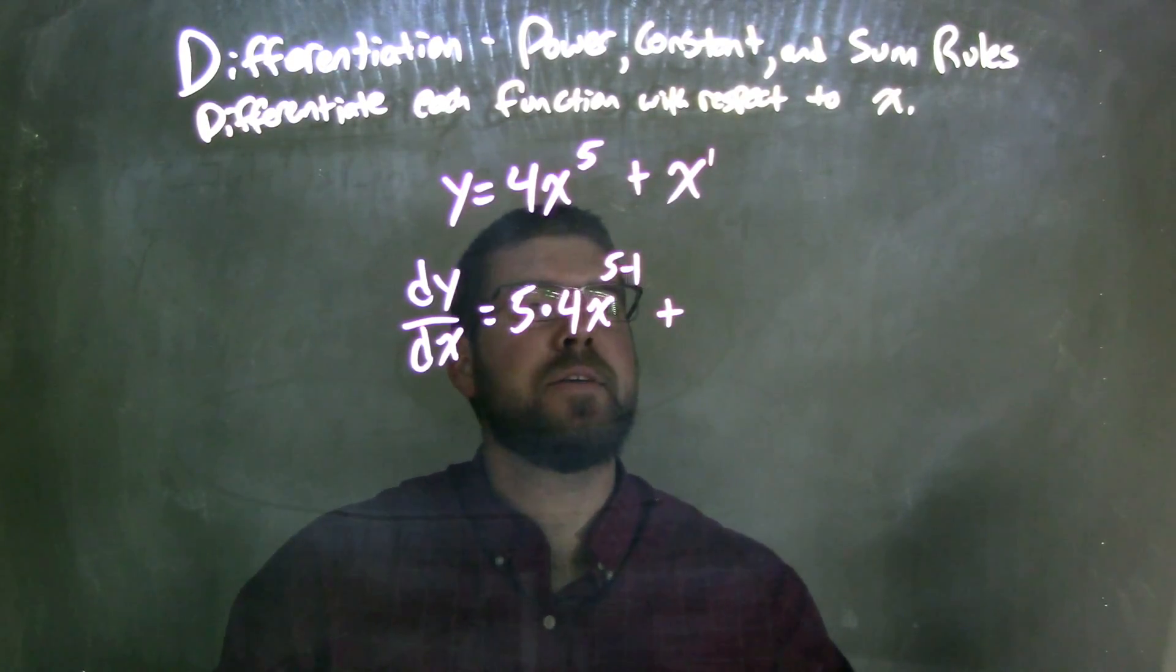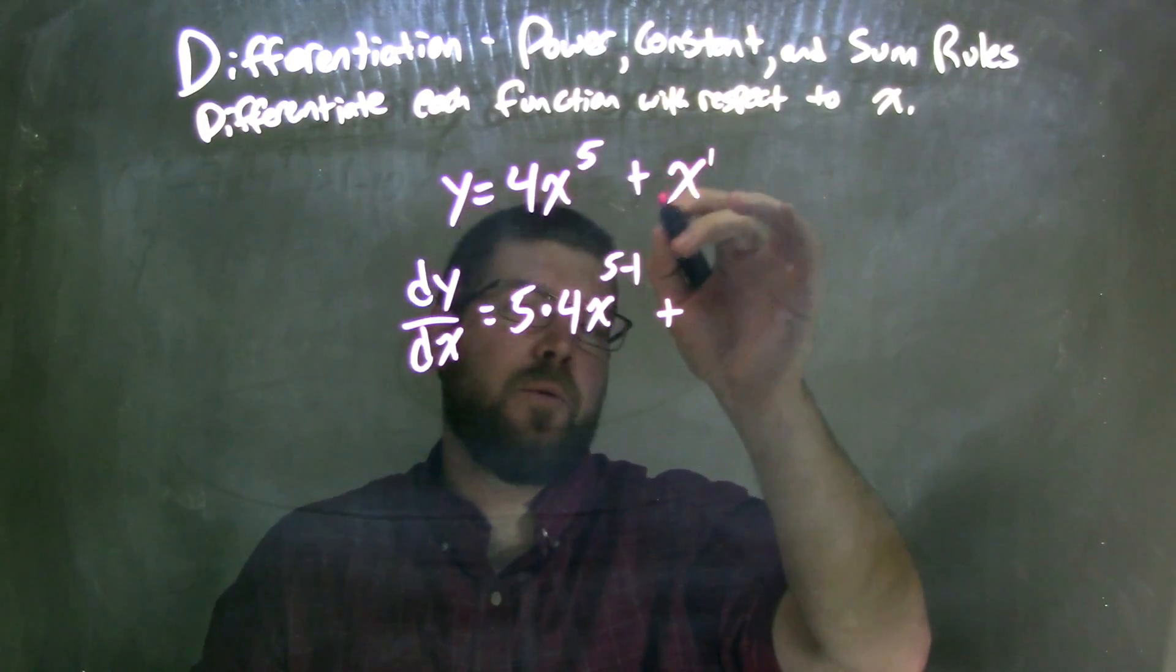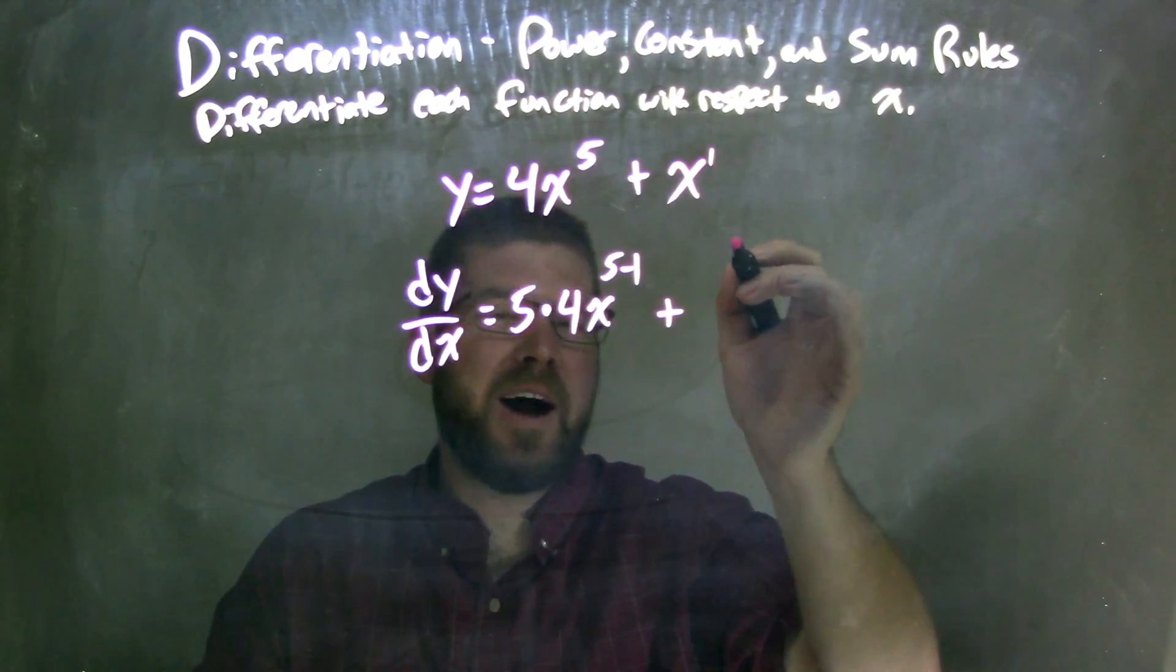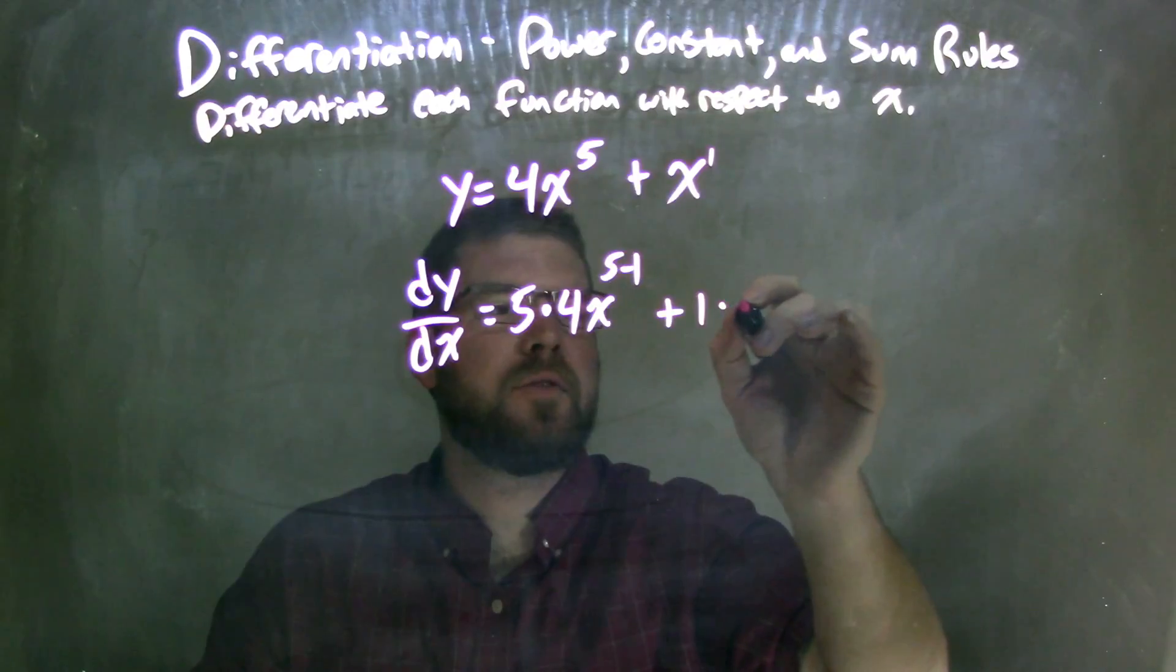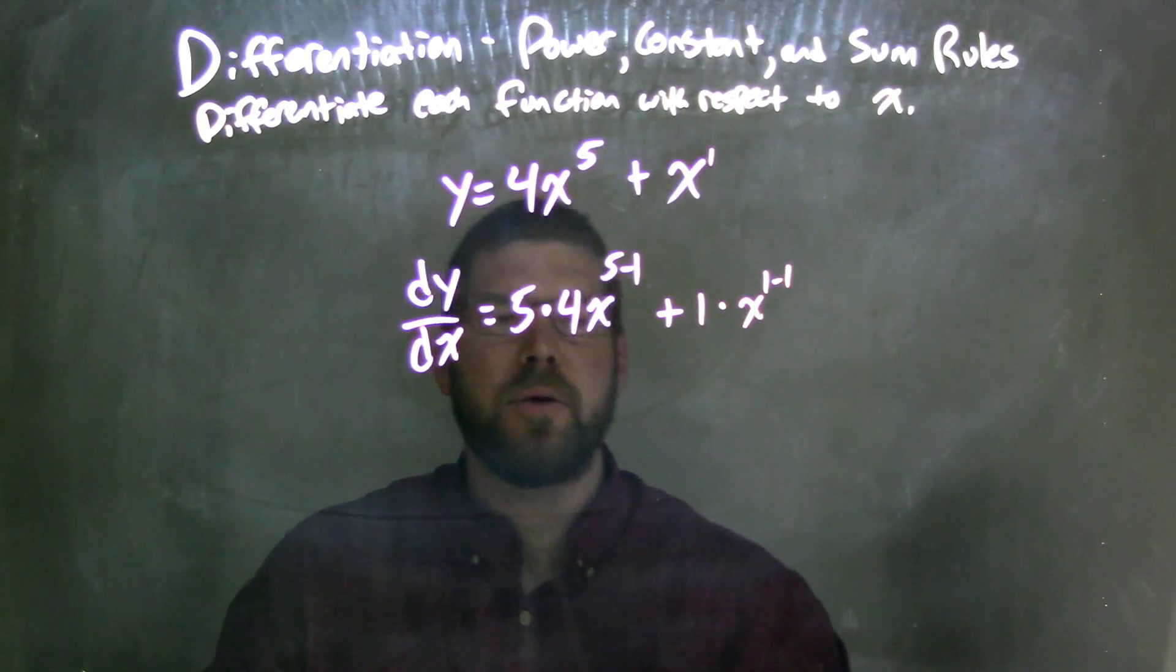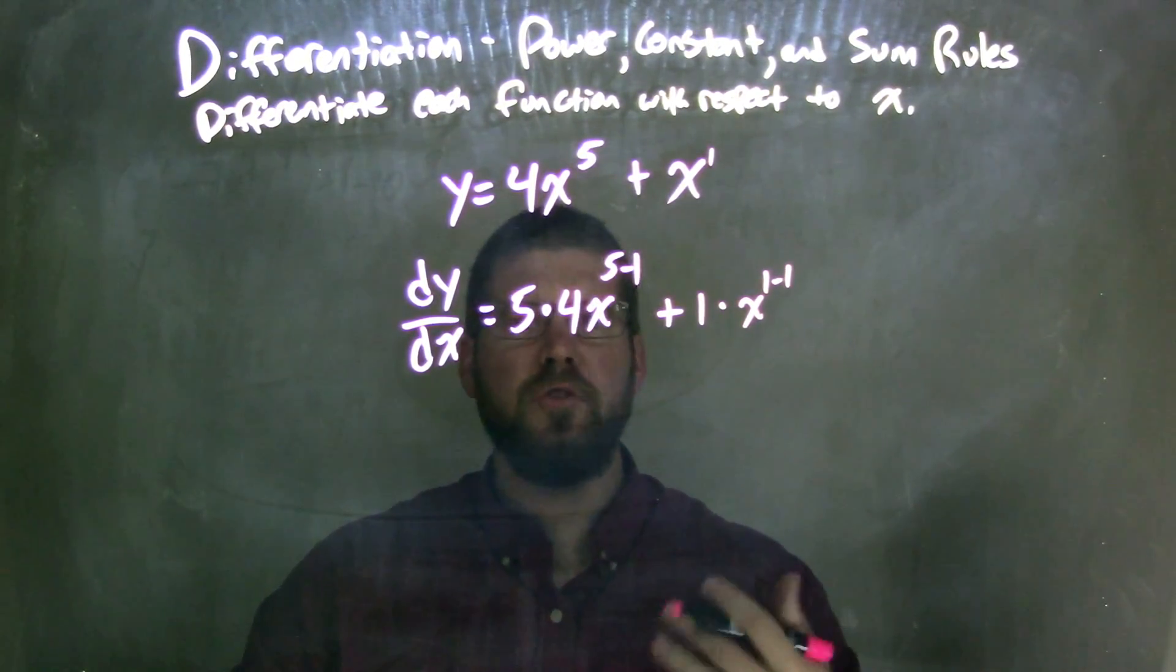But if there's a 1 out front, or the exponent, and 1 out front, if we use power rule again, we can also get our answer. So 1 comes down times x to the 1 minus 1 power. So let's simplify this.